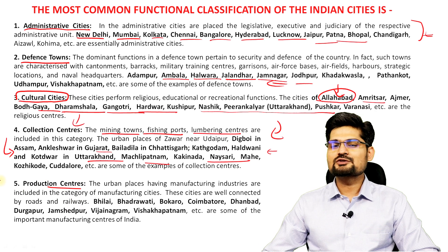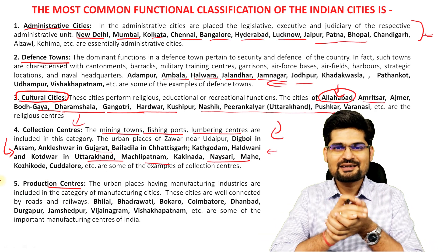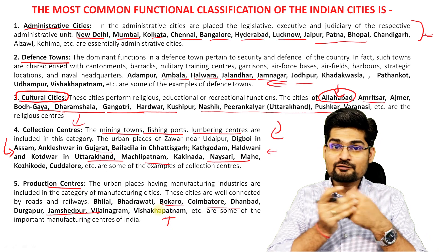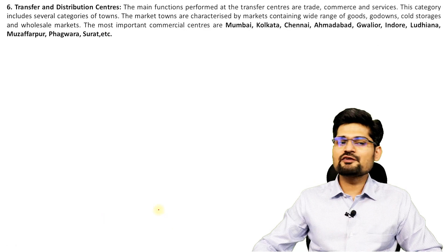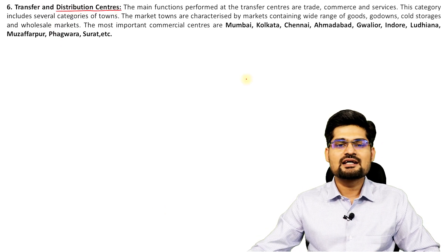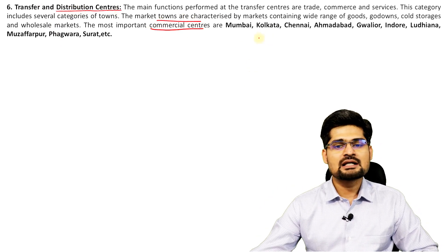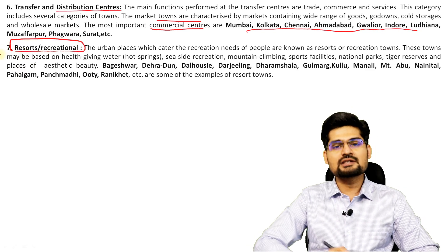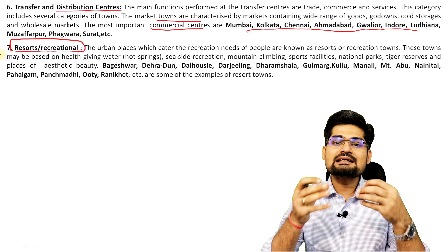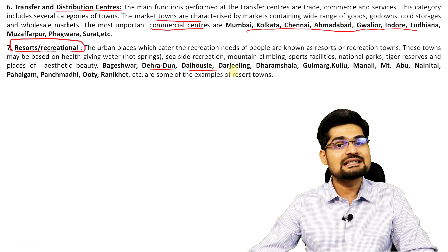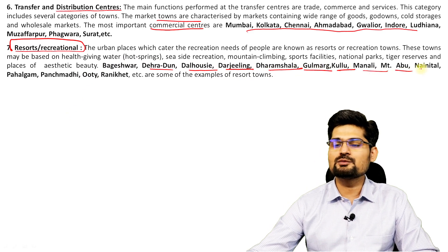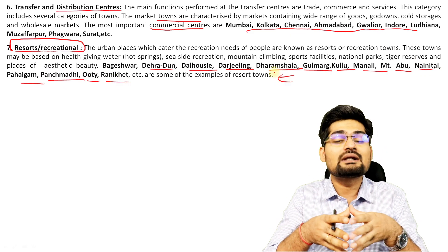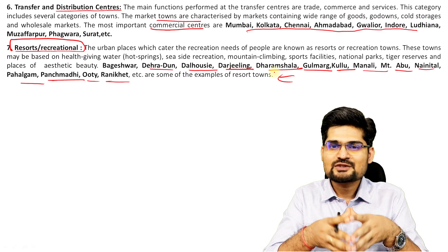The fifth category is production centers, known for the production of particular goods. For example, Bhilai, Bhadravati, Bokaro, Coimbatore, Dhanbad, and Durgapur are all iron and steel cities. The sixth category is transfer and distribution centers — important commercial centers and market towns like Mumbai, Kolkata, Chennai, Ahmedabad, Gwalior, and Indore. The seventh category is resort or recreational centers, known for recreational facilities: Bageshwar, Dehradun, Dalhousie, Darjeeling, Dharamshala, Gulmarg, Kullu-Manali, Mount Abu, Nainital, Pahalgam, Pachmarhi, Ooty, and Ranikhet.